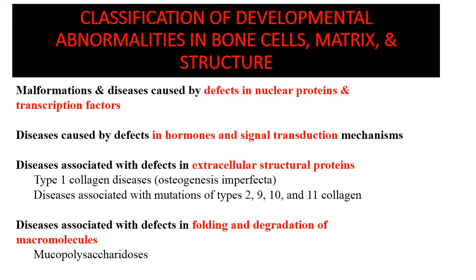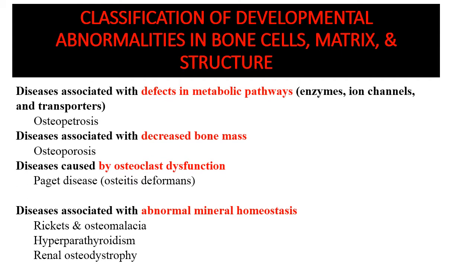The schema for categorization of bone diseases is based on the involvement of various pathways in bone homeostasis. One factor is a defect in nuclear protein and transcription factors. Another is a defect in hormone and signal transduction mechanisms. There are also defects in extracellular structural proteins, the commonest being type 1 collagen disease, known as osteogenesis imperfecta. Other diseases involve defects in metabolic pathways, enzymes, ion channels, and transporters, with the most important being osteopetrosis or marble bone disease.